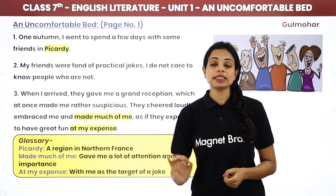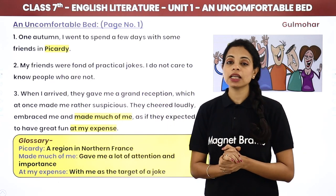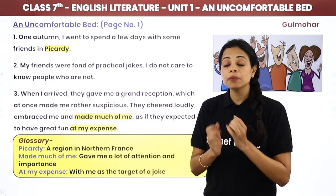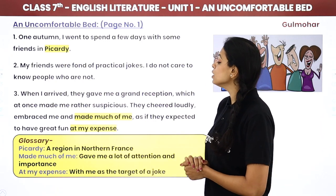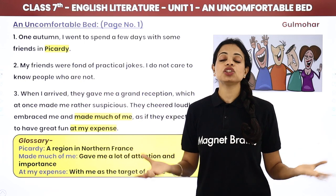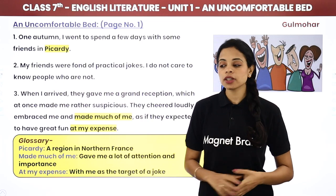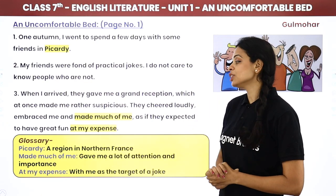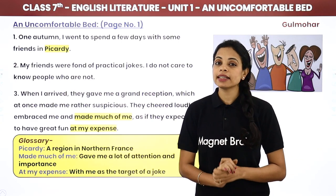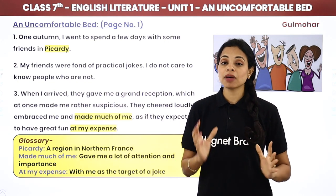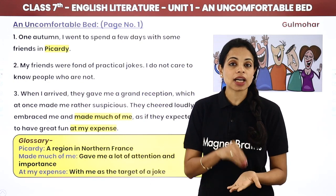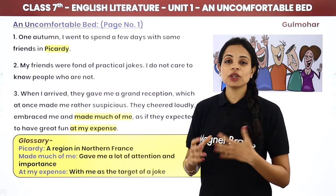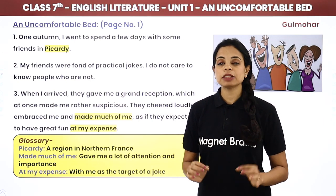Here we have two great idioms. 'They cheered loudly and embraced me' — they cheered with great enthusiasm and hugged me. 'Made much of me' means giving someone a lot of attention or importance — everyone came out to meet him and made a big fuss. 'At my expense' means they were going to target him as the subject of the joke. So he felt his friends were definitely going to play a practical joke on him.